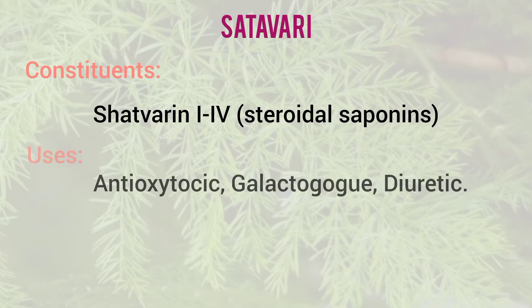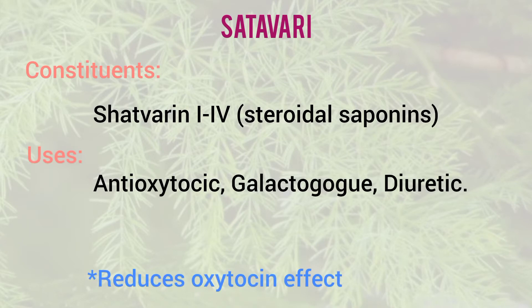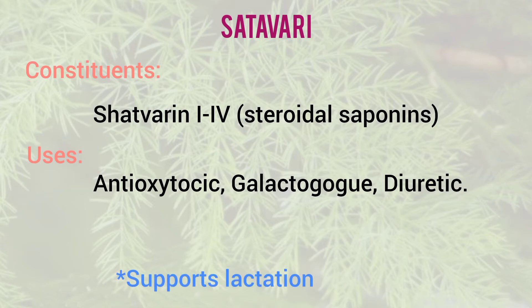The uses of Shatavari include being anti-oxytocin in nature. Ergot is oxytocin in nature, whereas Shatavari is anti-oxytocin. It is also a galactogogue — meaning it increases milk production in lactating mothers — and it is a diuretic.